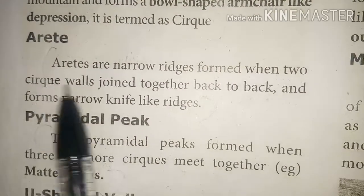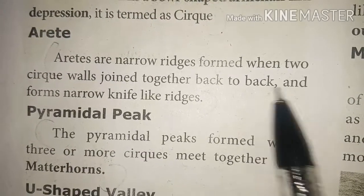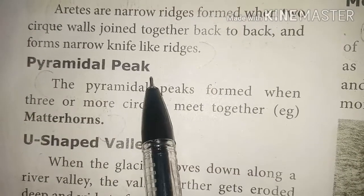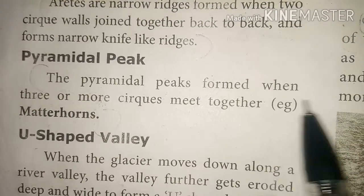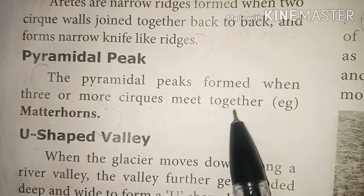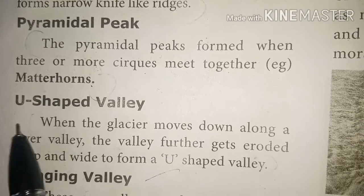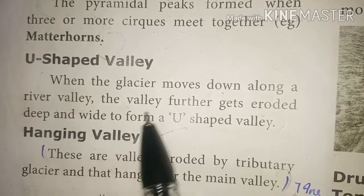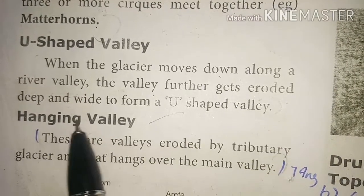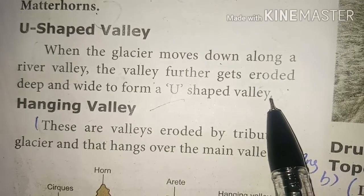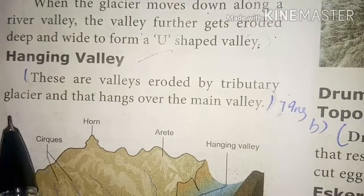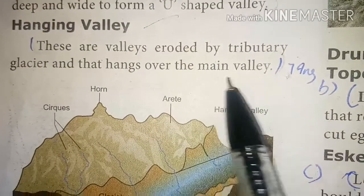Arêtes are narrow ridges formed when two cirque walls join together back to back and form narrow knife-like ridges. Pyramidal peaks are formed when three or more cirques meet together — example: Matterhorn. When the glacier moves down along a river valley, the valley further gets eroded deep and wide to form a U-shaped valley.